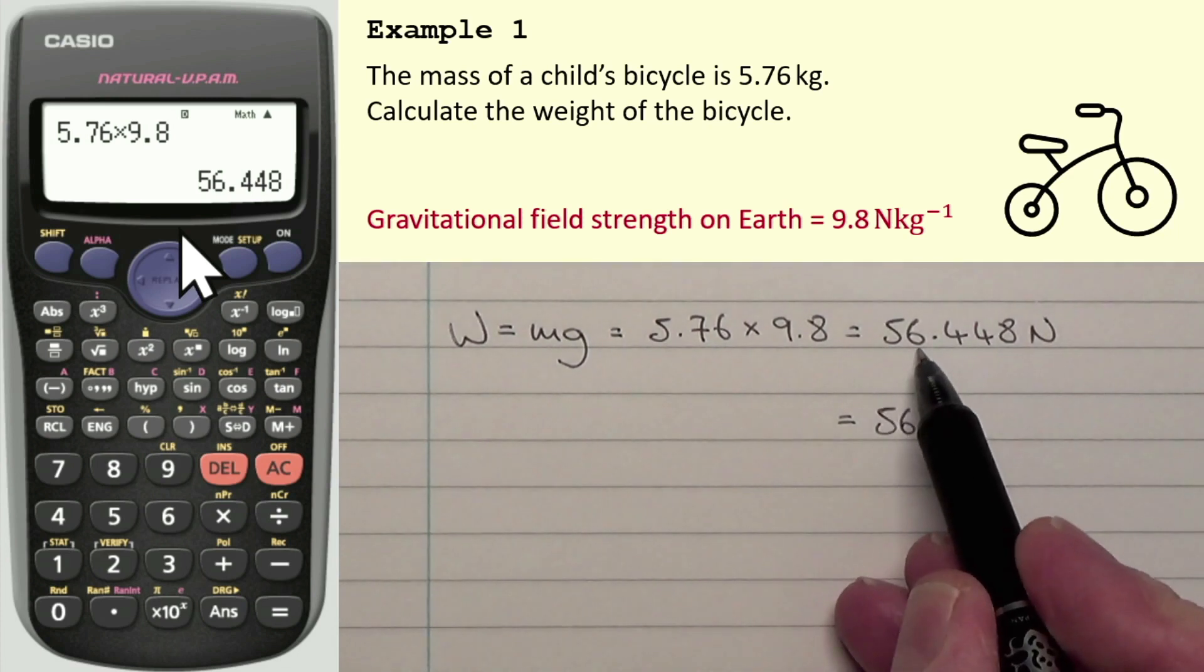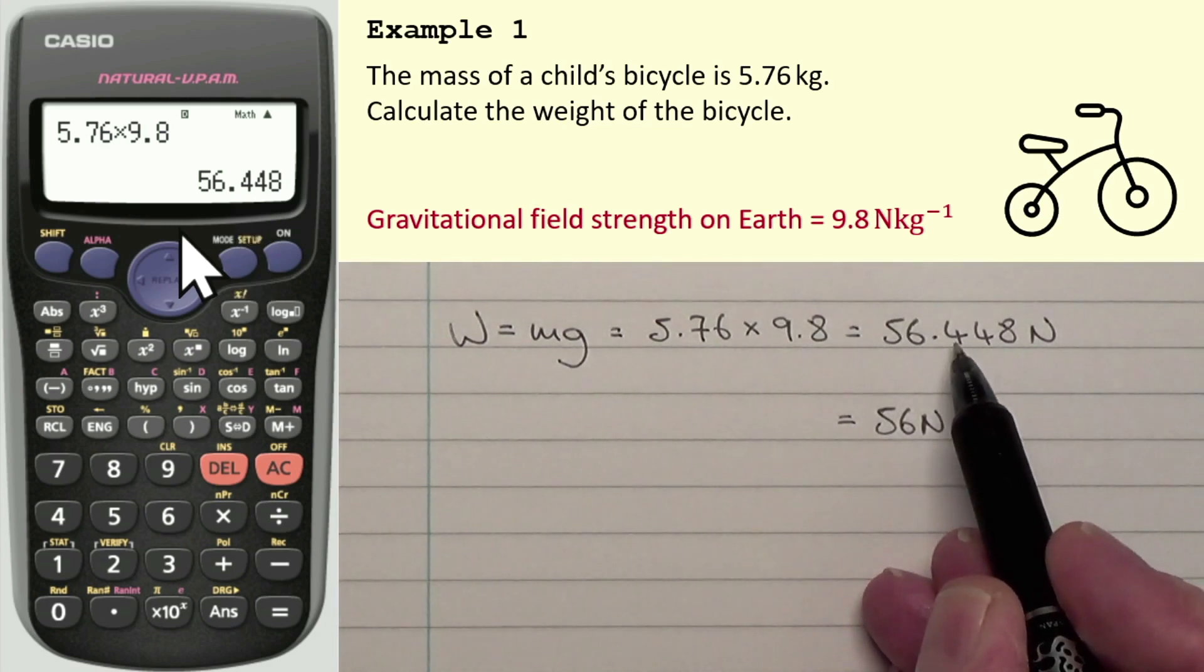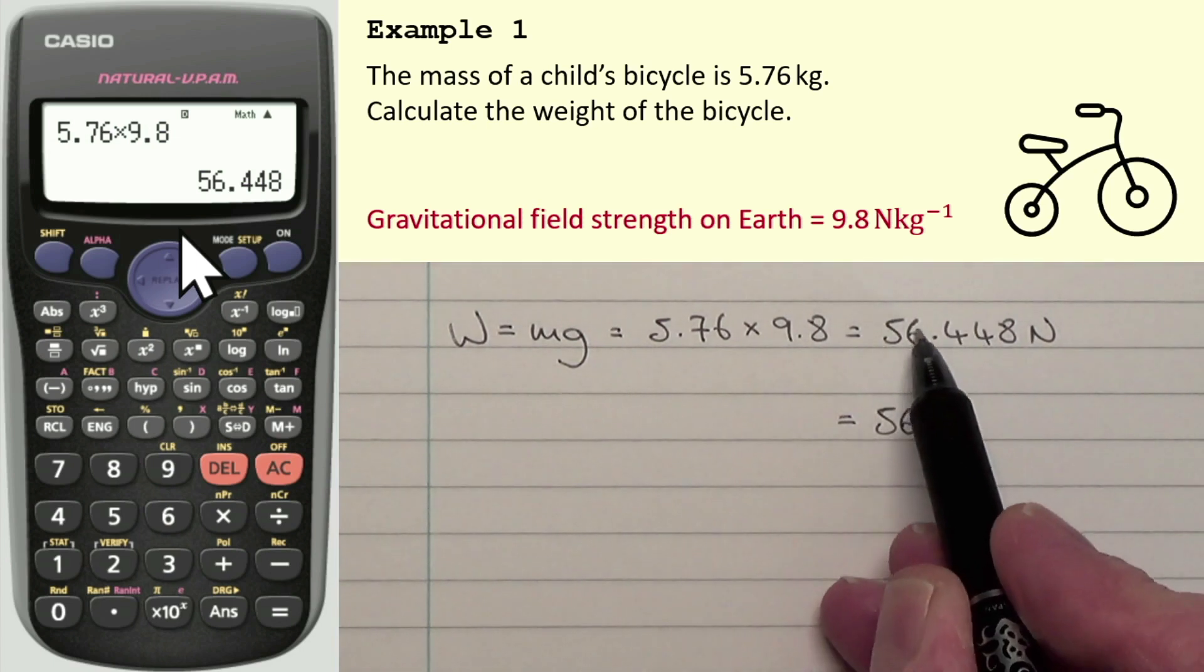So our final answer should have two significant figures. So I just need to write that as 56 newtons. So, of course, I write the first two figures. But this second figure, I might have to round that up if the number after it is a 5 or more. So because that's a 4, I didn't have to round this up.